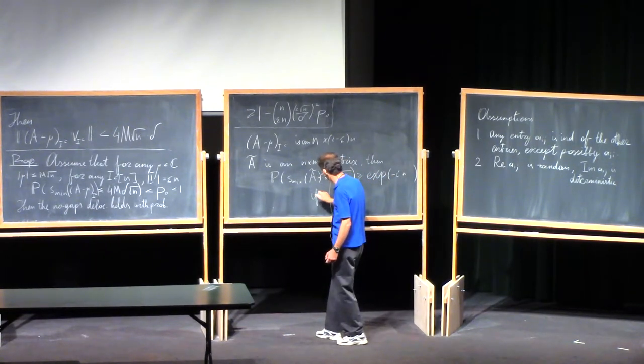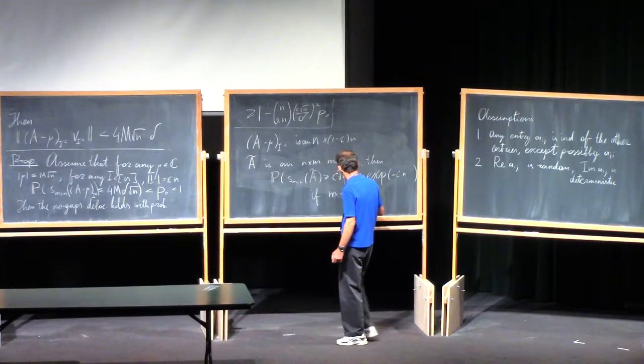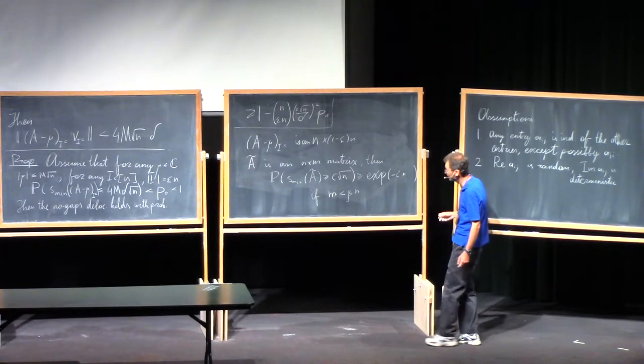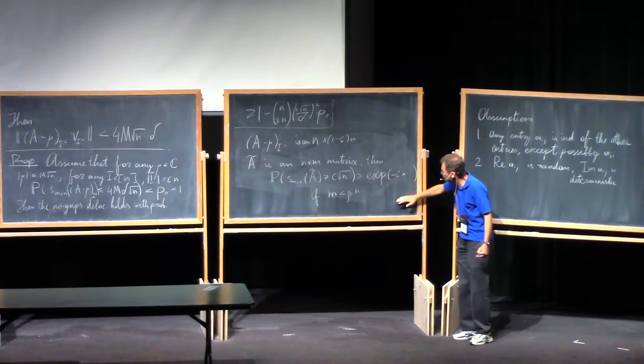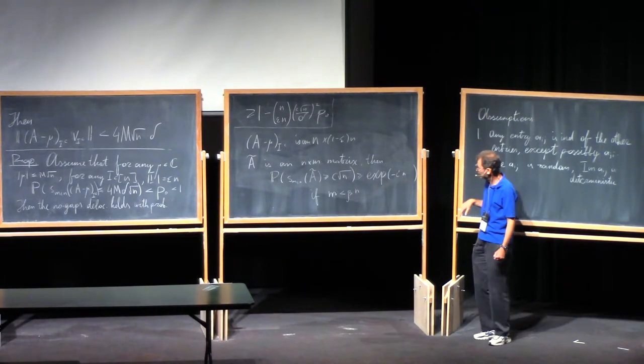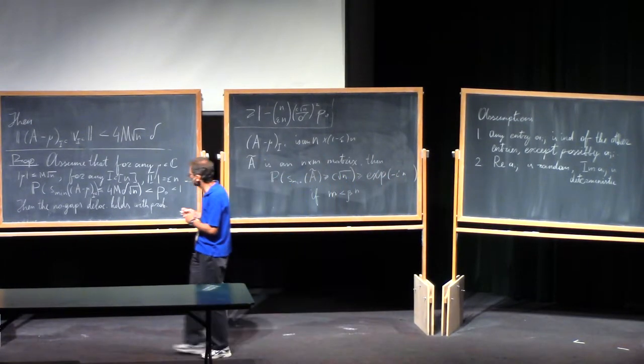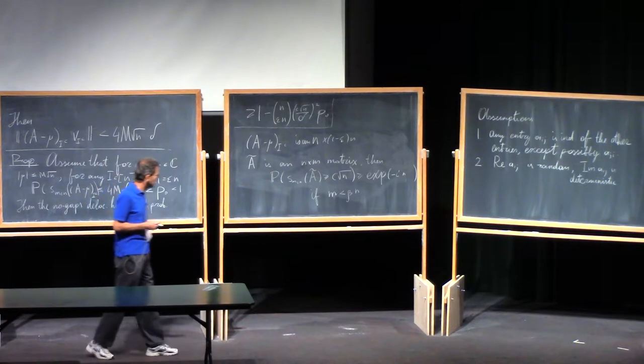And if m is less than some beta n for a small absolute constant beta. So we may try, this result was basically proved in the lectures of Terry Tao, so let me save time on proving it again. We can look at this and try to apply it to our situation. It's very close. We only need to take some union bounds, but we know how to take them.